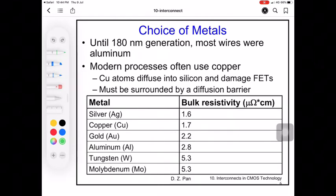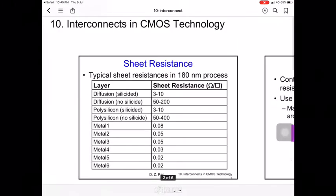For the choice of metal, until the advancement of 180 nanometer technology, most wires were made using aluminum. Modern processes usually use copper, however copper has a drawback - copper atoms diffuse into silicon and can damage the transistor. So copper wires have to be surrounded by a diffusion barrier. Each metal layer has different resistivity, and silver has the lowest resistivity of all.